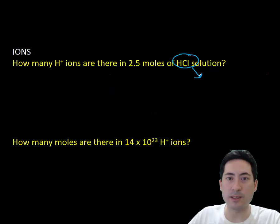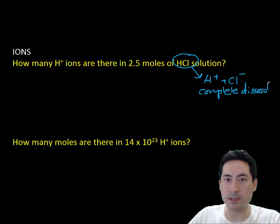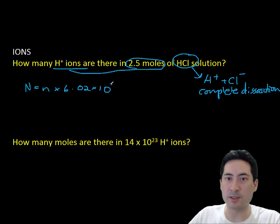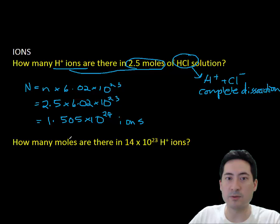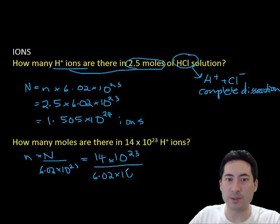Just moving quickly then onto ions. This can be a little trickier. You need to write out the formula. So HCl only gives you one ion. So that gives 2.5 ions. If it was something like H2SO4, you'd have to double it because two H pluses are coming off. So in a similar way, you get 1.5 by 10 to the 24 H+ ions in 2.5 moles of HCl. Working around the other way, if you've got 14 by 10 to the 23 H+ ions, that will give you a total of 2.3 moles of H+ ions.